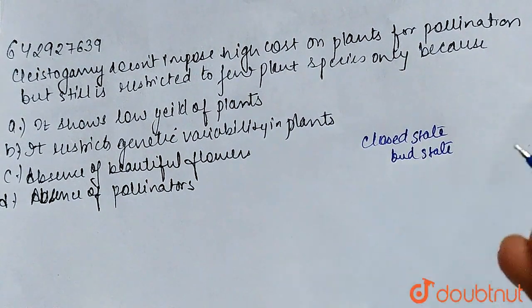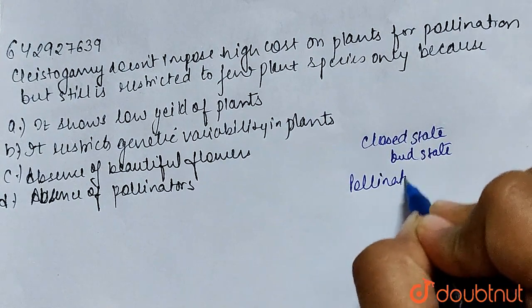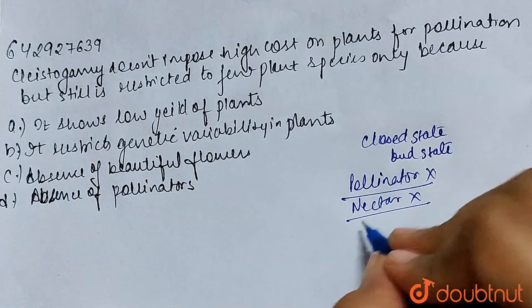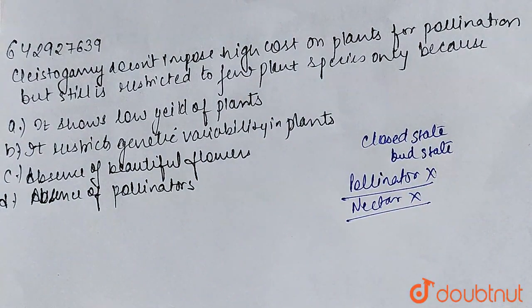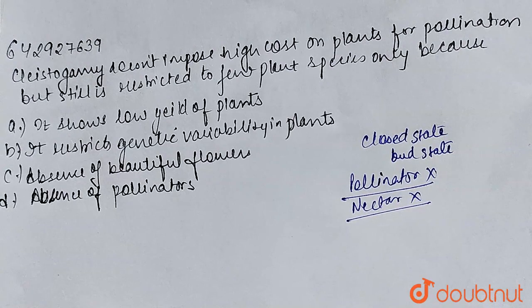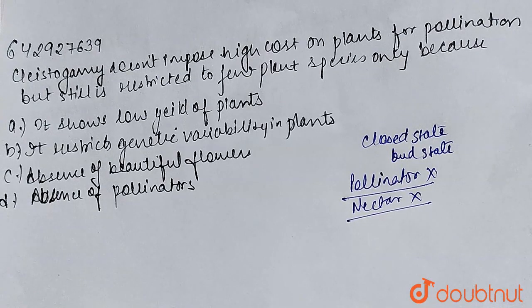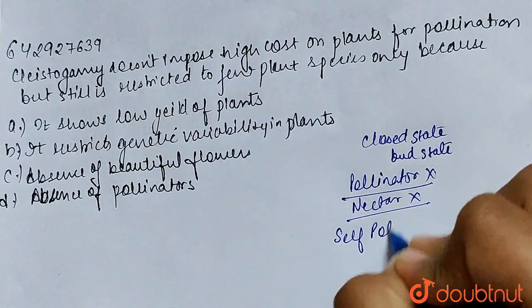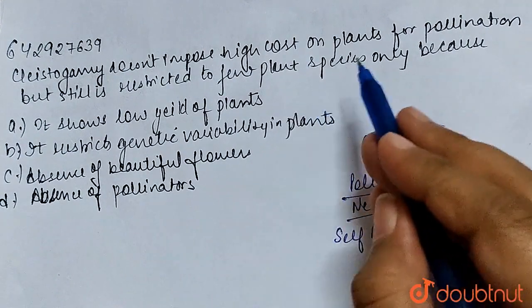It means that there is no pollinator or nectar, so there is no need to give pollen rewards. If it is cross-pollinated, the flowers will be small and dry. If it is cross-pollinated with open flowers, the flowers will be bright and nectar will be provided. Since there is self-pollination in cleistogamy, there is no pollinator, which means it does not impose a high cost.